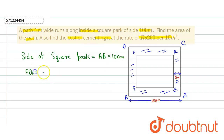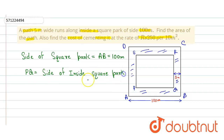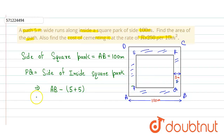The side of the inside square park PQ will be equal to AB minus 5 plus 5, that is, minus this 5 and this 5. So we get PQ equals 100 minus 10, which gives us 90 meters.